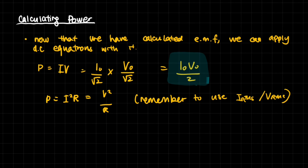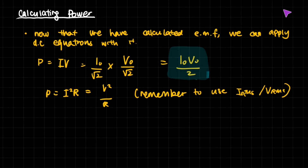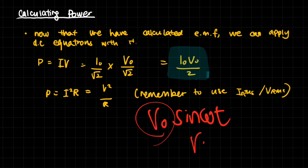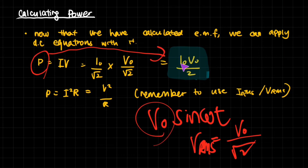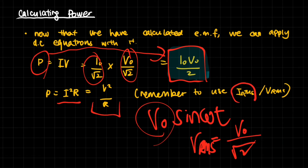Because voltage has the same sinusoidal form V = V₀ sin(ωt), we find its RMS the same way: V_rms = V₀/√2. Now we have two constant values — the RMS current and RMS voltage — and we multiply them together since P = IV. So the average power equals the maximum current times the maximum voltage divided by 2, i.e., P = I_rms × V_rms. Remember to always use the RMS values, not the peak values directly.